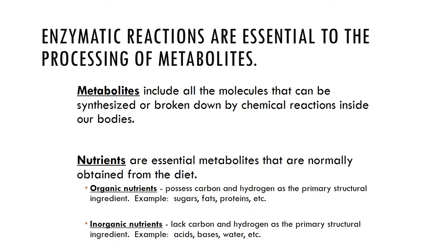We have different types of nutrients. Organic nutrients possess carbon and hydrogen and may form sugars, fats, proteins, and energy sources. Organic compounds must contain carbon and are generally formed through covalent bonds. Inorganic compounds do not contain carbon; they're generally formed via ionic bonding between metals and nonmetals and are found in smaller amounts in living organisms.